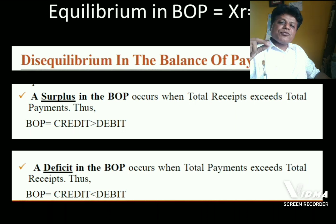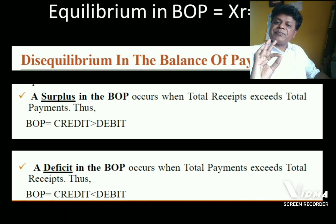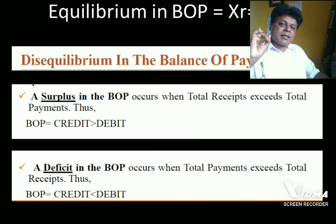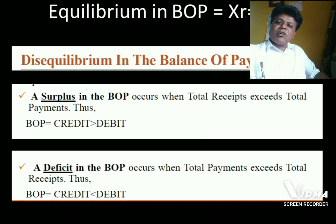Two important terms here: equilibrium in BOP and disequilibrium in BOP. When we say disequilibrium in BOP, we mean to say either the balance of payment is surplus or it is deficit. This is the status of BOP in terms of the relationship between exports and imports.